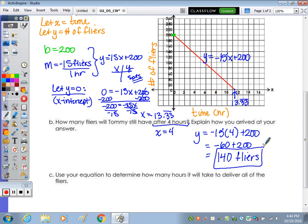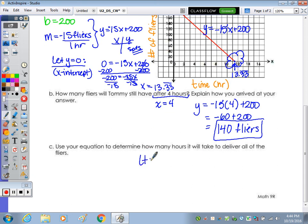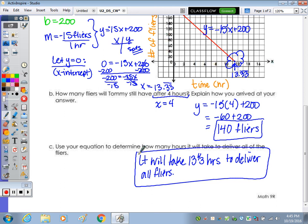The last part: Use the equation to determine how many hours it will take to deliver all the flyers. Well, to deliver all, we're out of them right here. Since we found the x-intercept over here, we have the answer. It's 13 and one-third hours to deliver all flyers. And if you want to make note, we look at the x-intercept.